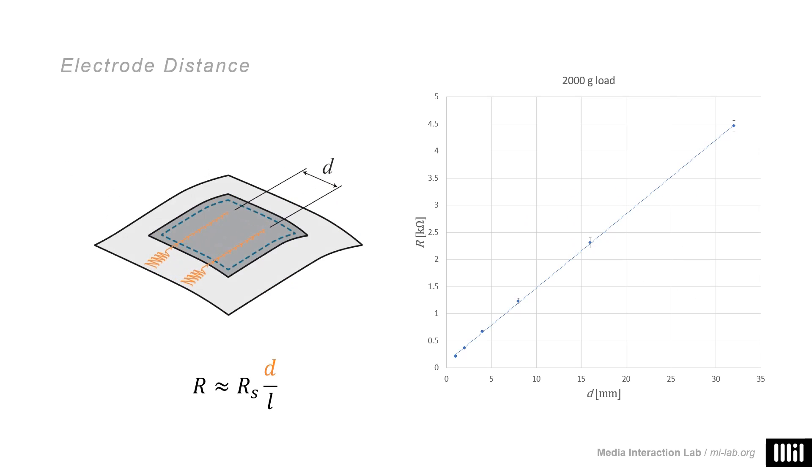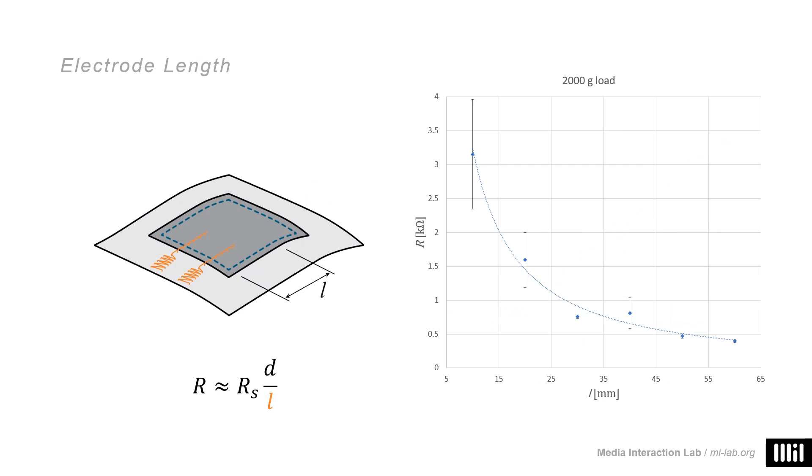In our evaluation, it turns out that when we vary electrode distance D, the resistance of the resulting sensor patch scales directly proportional. It's even strikingly linear. On the other hand, when we vary electrode length, which is also in line with theory, we can see that the sensor resistance is inversely proportional, just as the formula suggests. This means we can, to some degree, calculate on this basis and approximate what the resistance of a sensor will be beforehand, and therefore we can design it with the capabilities of our hardware in mind.